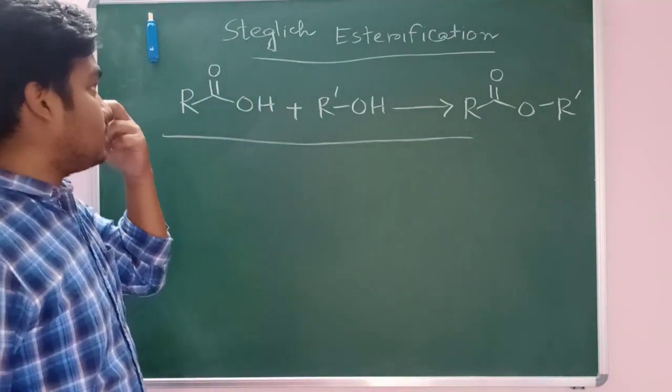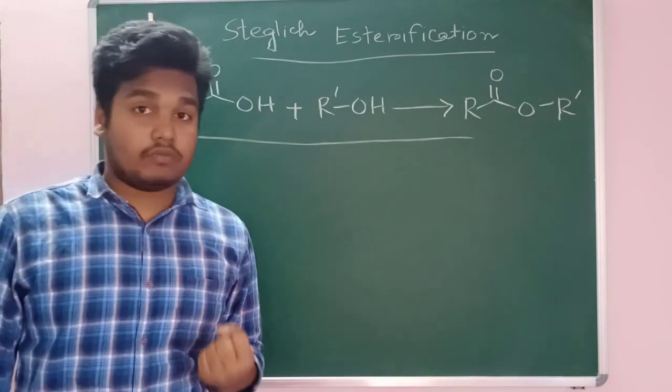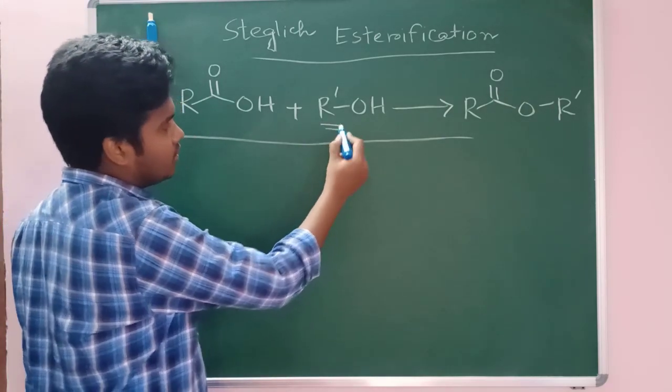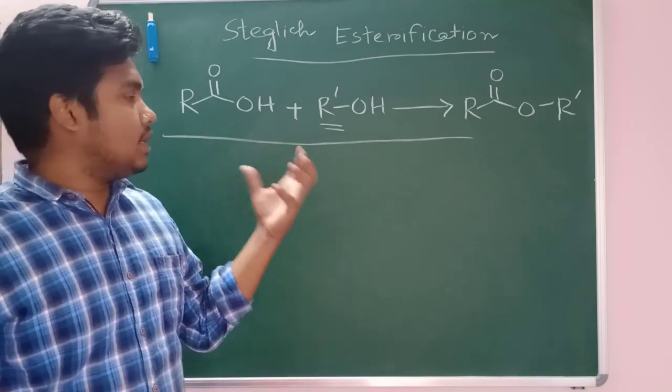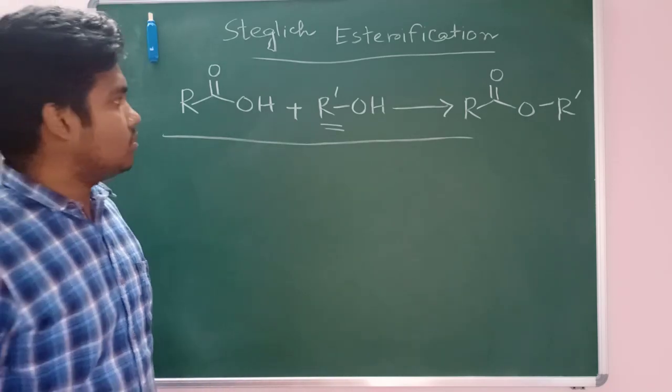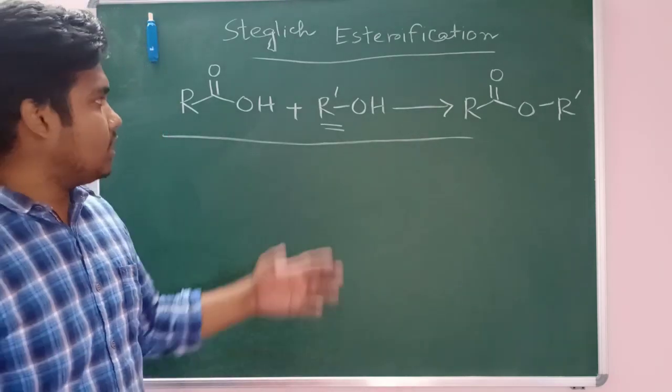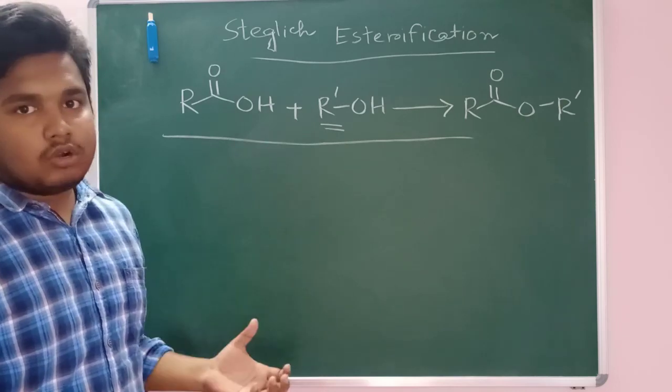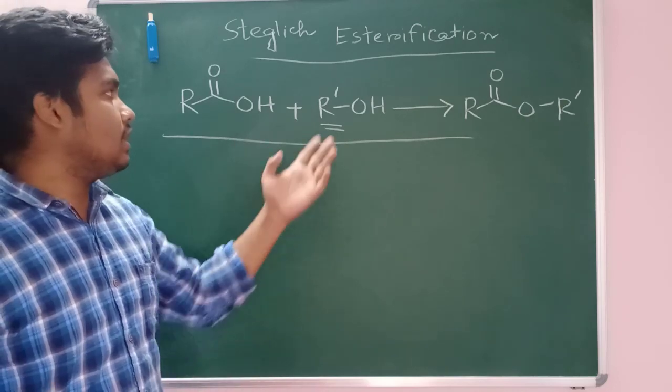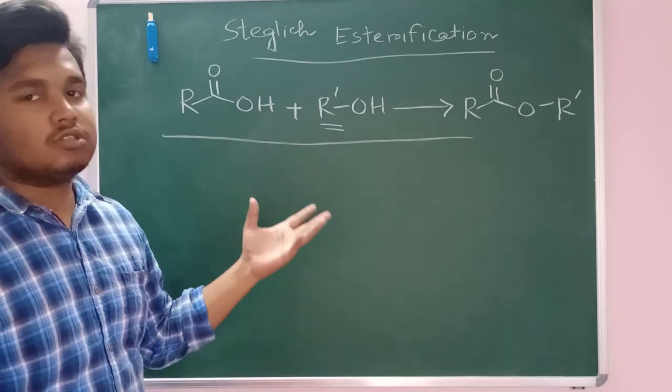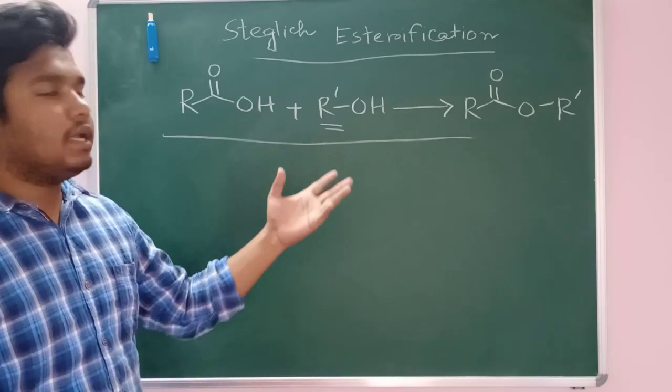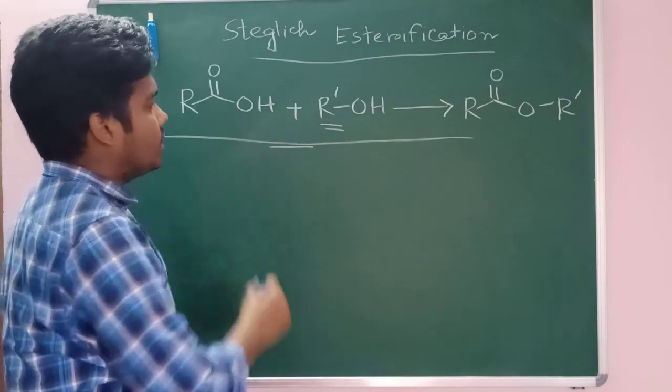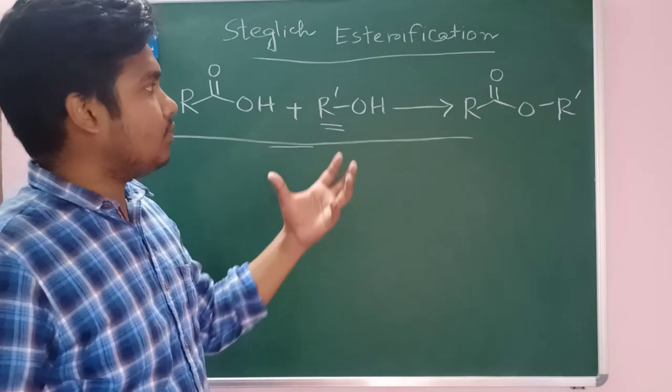But what is the speciality of the Steglick Esterification? The speciality of this reaction is that for this alcohol we can choose any sterically hindered alcohol also. In that case we can get ester. But if you take any normal Lewis acid or protic acid-based esterification, this alcohol can be converted into alkene because of some elimination byproduct. In that case you cannot get your ester. This is the speciality of Steglick Ester. You can selectively get your ester.